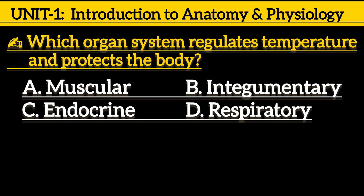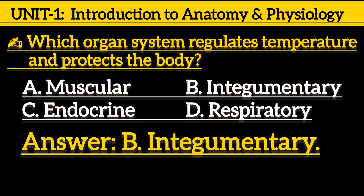Next one is, which organ system regulates temperature and protects the body? Option A, muscular; option B, integumentary; option C, endocrine; option D, respiratory. Correct answer is option B, integumentary.